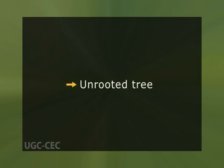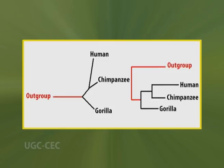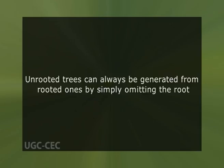Unrooted trees illustrate the relatedness of the leaf nodes without making assumptions about ancestry. They do not require the ancestral root to be known or inferred. Unrooted trees can always be generated from rooted ones by simply omitting the root.